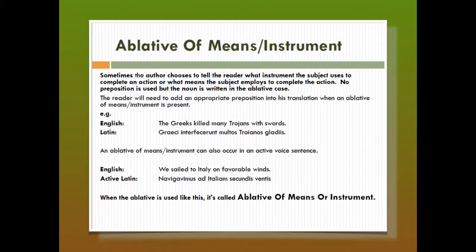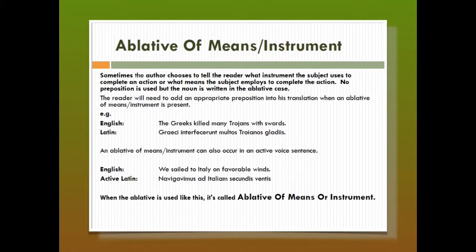When you put the preposition 'with' or 'cum' in the sentence, you create a picture where the sword would be walking with the soldier. So in order to communicate the idea that the sword is the instrument used to complete the action, the Roman simply doesn't put in the preposition 'cum.' He only uses the noun in the ablative case.